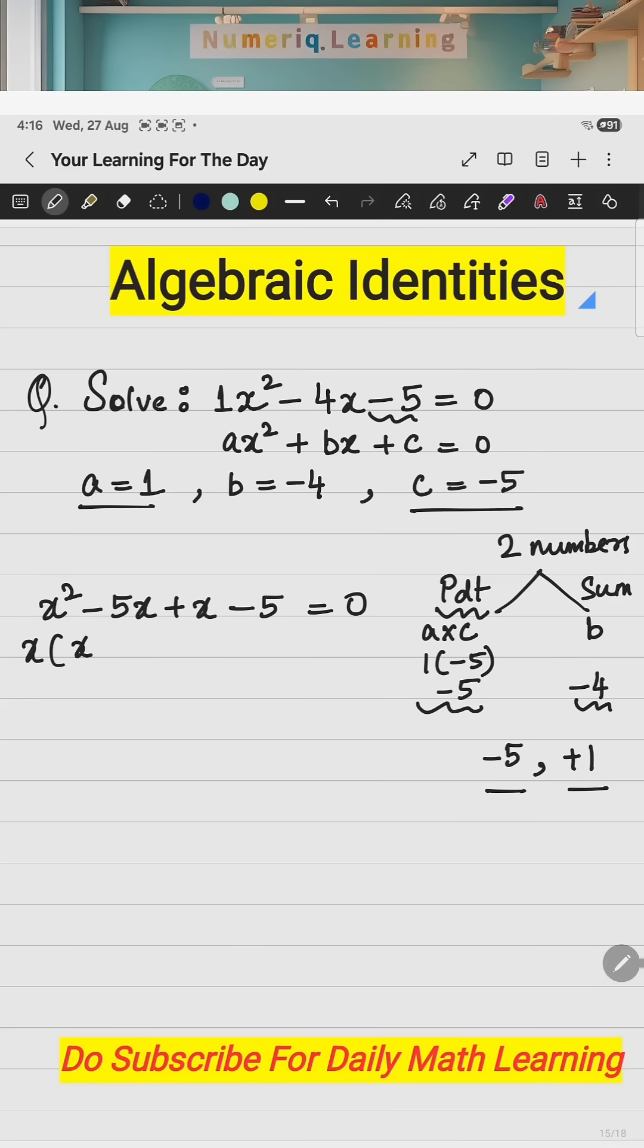Take out x common, x minus 5, plus 1 common, and then again x minus 5 equal to 0. Then group it up. So, if these two terms, what is common? x minus 5 is common, the remaining is x plus 1 equal to 0.